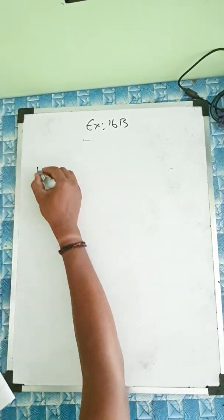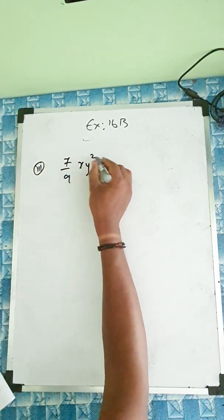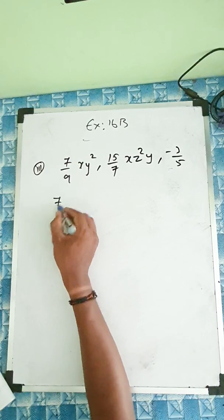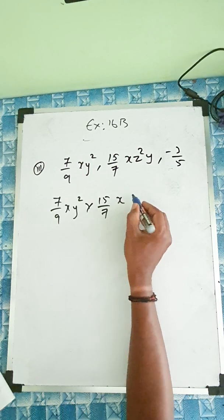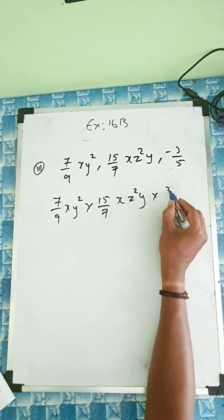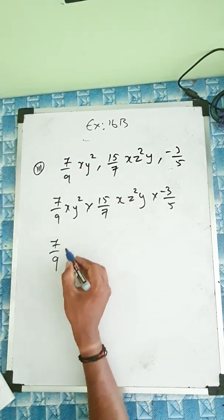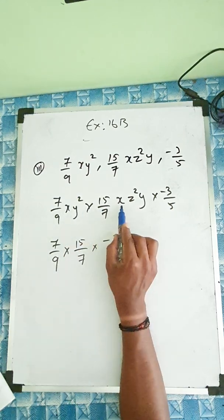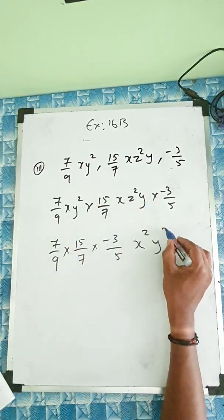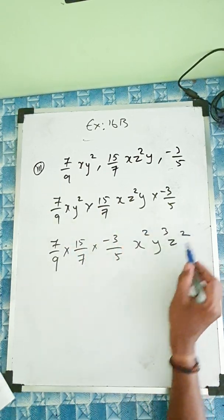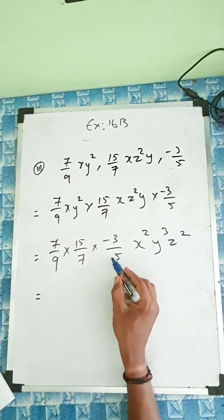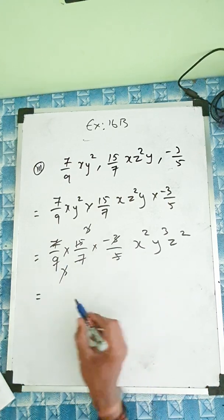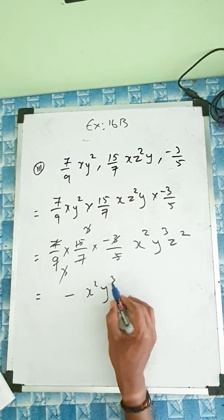Question number 3: 7 by 9 xy squared, 15 by 7 xzy, minus 3 by 5. Writing as multiplication: 7 by 9 xy squared into 15 by 7 xzy into minus 3 by 5. Numerically: 7 by 9 times 15 by 7 times minus 3 by 5. For x: 1 plus 1 is 2. For y: 2 plus 1 is 3. z squared is only here. Cancelling: 5 and 15 cancel; 7 and 7 cancel; 3 and 9 cancel — everything cancels. Answer: minus x squared y cubed z squared, and you can just write minus 1 in front.